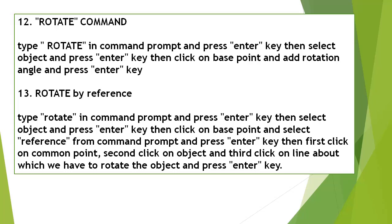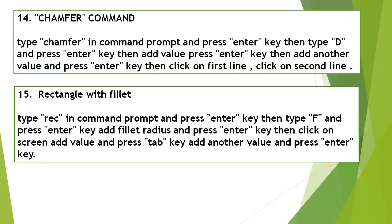Rotate Command: Type Rotate in the Command Line Window and press Enter, select the object and press Enter, then click on the base point, add the rotation angle and press Enter. Rotate by Reference: Type Rotate in the Command Line Window and press Enter, select the object and press Enter, click on the base point, select Reference from the command prompt and press Enter, then first click on the common point, second click on the object, and third click on the line about which to rotate the object and press Enter. Chamfer Command: Type Chamfer in the Command Line Window and press Enter, type D and press Enter, add the first value and press Enter, add another value and press Enter, then click on the first line and click on the second line.